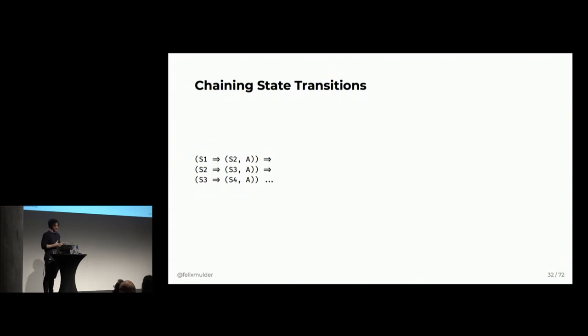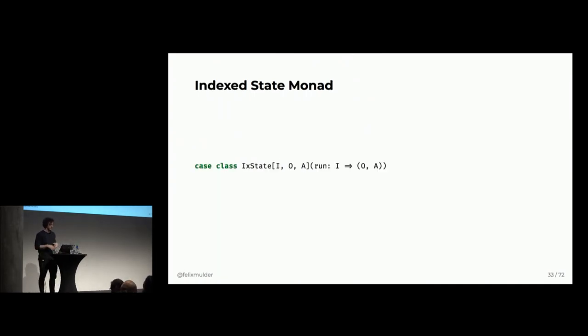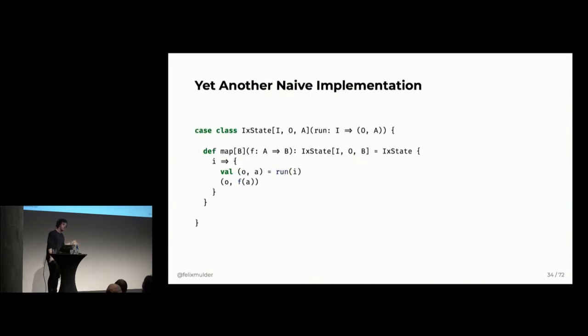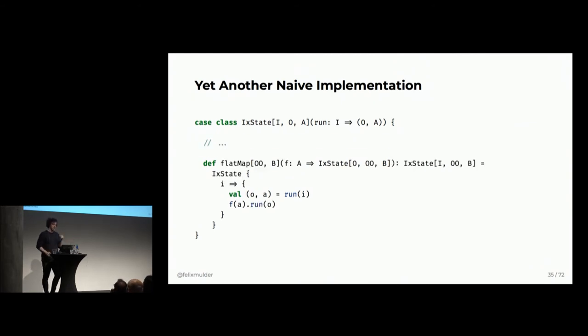So, now, what we can do is that we can chain state transitions together. If we have this, we can have some state one, which gives back a state two, et cetera. And then you can chain these states together. And we can create a wrap around this called index state, which simply wraps the function run, which now goes from some input state i into an output state and a value a. And we can reimplement the map function that we had before. And it's pretty much exactly the same, except it has an extra type parameter. So, that's not too bad, right? Exact same implementation.